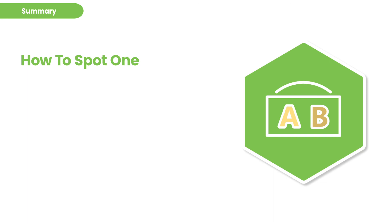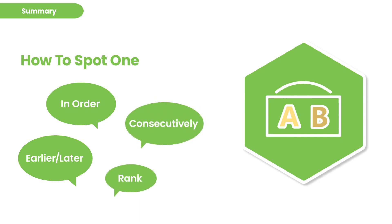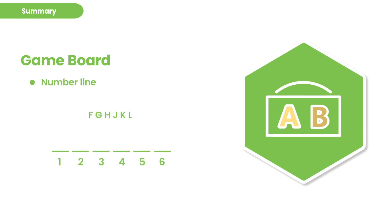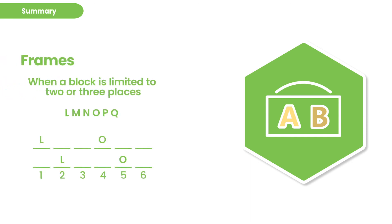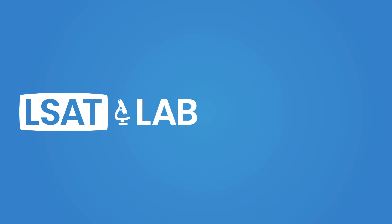In summary, you spot a standard ordering game with language suggesting something comes before or after something else, players come in order or consecutively, or you're ranking them. The game board is a number line with however many positions they give you. Rule types to be ready for: relative rules relating two or more players, fixed rules building blocks or split blocks, position rules ruling out a player from a position, and conditional if-then rules. Create frames when you have a block limited to two or three places in the game board. Visit us at LSATlab.com.